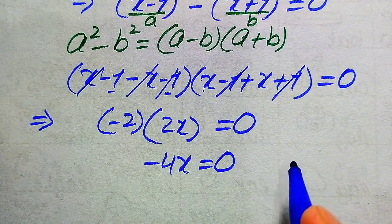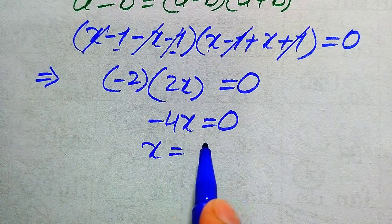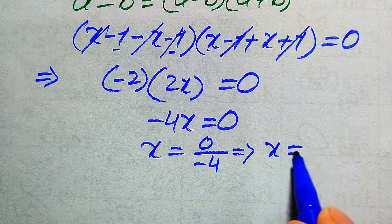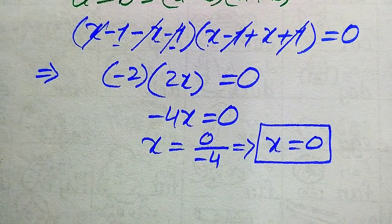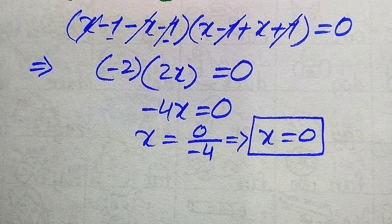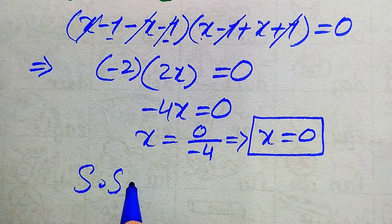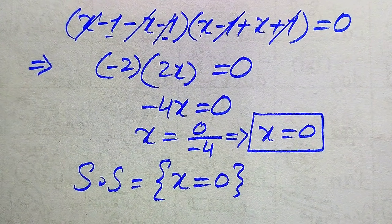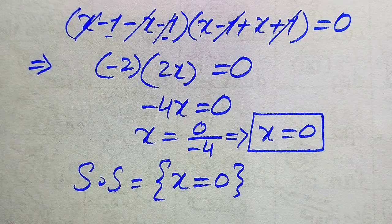This gives -4x = 0, so x = 0/(-4) = 0. We already verified in the first method that x = 0 satisfies the given equation. Therefore, x = 0 is the only solution of the given equation. Thank you for watching — please subscribe to my channel for more exciting videos.